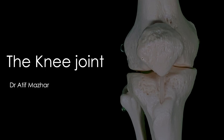Let's look at the bones that contribute in making this joint. We are looking at the distal femur and the proximal tibia — these are the two bones that primarily contribute in making the knee joint. We can see the patella bone facing the front of the lower femur. We can also see the head of the fibula bone, which is not contributing in making the knee joint.